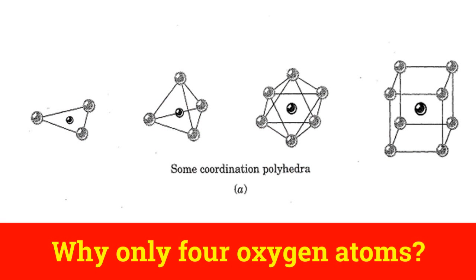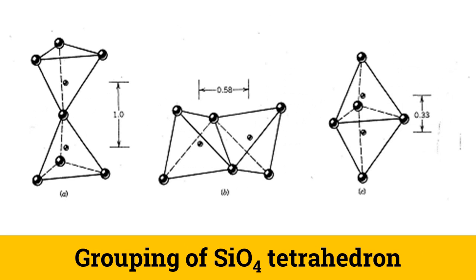Why is silicon surrounded by 4 oxygen atoms only? This is determined by the coordination number, which is the minimum radius ratio of the cation and anion. For SiO4, the radius ratio between silicon and oxygen comes out to be 0.225, and that corresponds to a coordination number of 4. This determines that 1 silicon will be surrounded by 4 oxygen atoms only. These silicon tetrahedrons can also join together to form various types of silicate minerals, which we will see later.